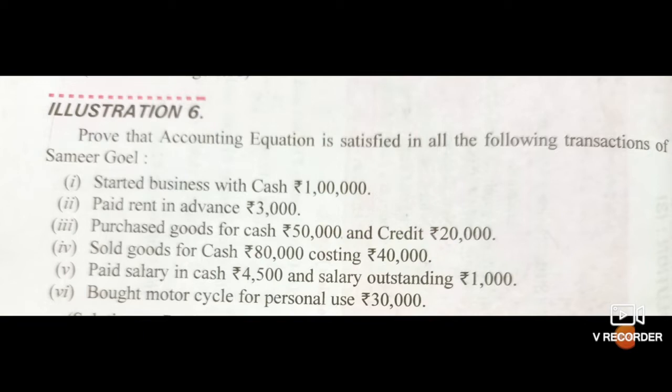Fourth, sold goods for cash Rs. 80,000, costing Rs. 40,000 — meaning the cost of goods is Rs. 40,000 and they were sold for Rs. 80,000. Fifth, paid salary in cash Rs. 4,500 and salary outstanding Rs. 1,000. And the last transaction: bought motorcycle for personal use Rs. 30,000. So now let's solve.